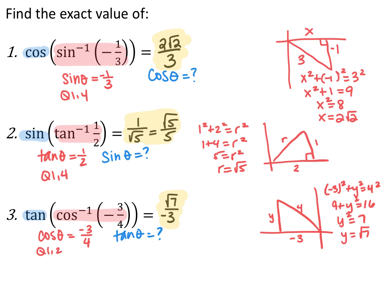For number three, tangent of the cosine inverse of negative three over four: the inside means cosine of theta equals negative three over four in quadrants one and two. The outside asks for the tangent of that angle. Since cosine is negative, I draw the triangle in quadrant two, with x over r equal to negative three over four. By the Pythagorean theorem, y is the square root of seven — be careful, this is a fake 3-4-5 right triangle. Tangent is y over x, giving root seven over negative three. Whenever composites aren't the same trig function, always evaluate inside out, and draw a triangle for non-unit-circle problems as in chapter six.